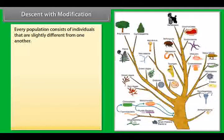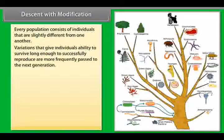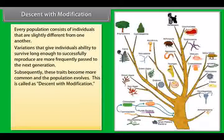Natural selection is the process whereby organisms better adapted survive. Every population consists of individuals that are slightly different from one another. Variations that give individuals the ability to survive long enough to successfully reproduce are more frequently passed to the next generation. Subsequently, these traits become more common and the population evolves — this is called descent with modification.